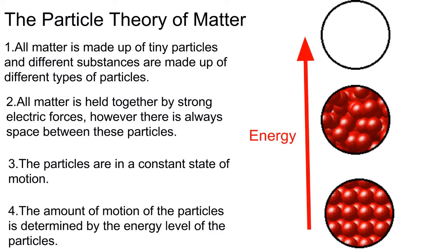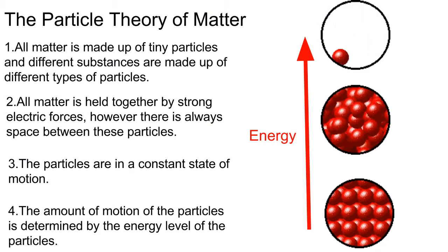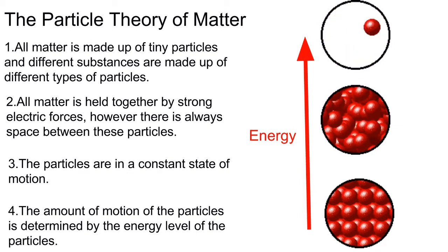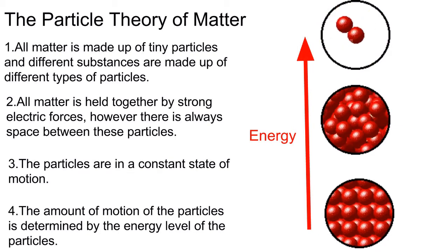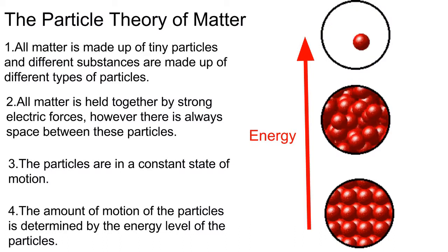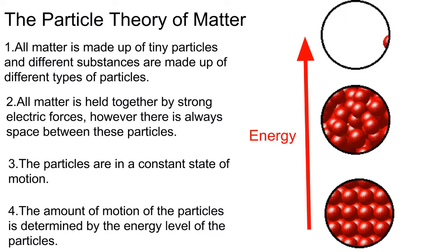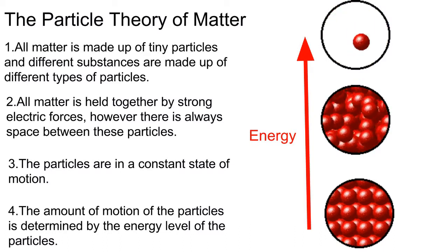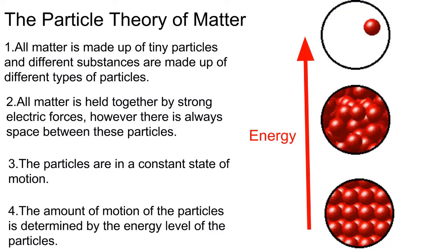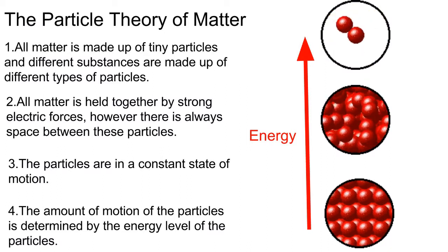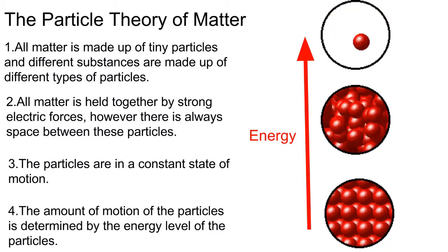You can see here particles of matter with three different levels of energy. Notice that at low energy, the particles are very close together, but there is still some space between them. Particles are most attracted to each other when they have low energy. Furthermore, notice that the particles still have a small amount of motion.